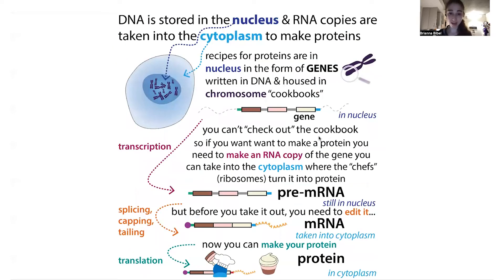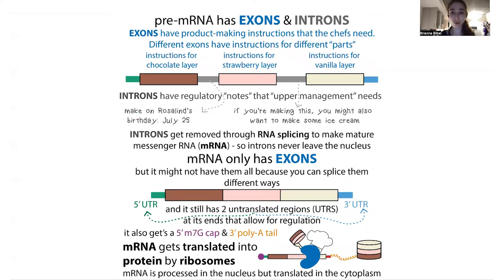Let's get back to the idea of alternative splicing and splicing in general. Splicing is the process where we go from the letter-by-letter copy of the recipe in the pre-messenger RNA and mature it into the mature messenger RNA form. To mature it, we remove regions called introns. In the DNA — and in the original pre-mRNA made from the DNA — you have regions you want to keep in the final recipe as well as regions you want to cut out.